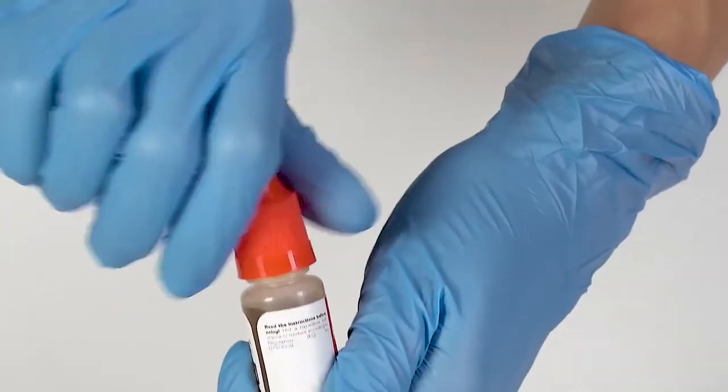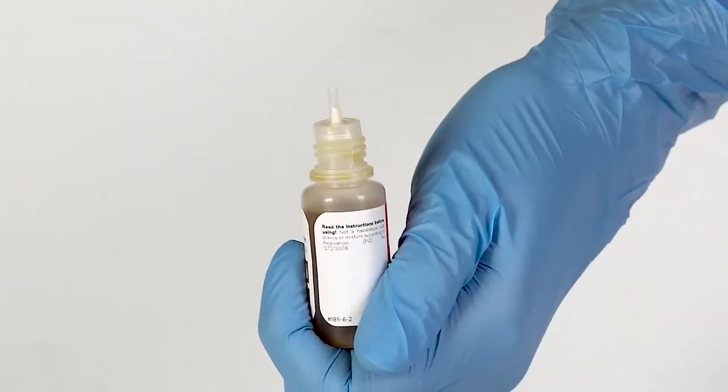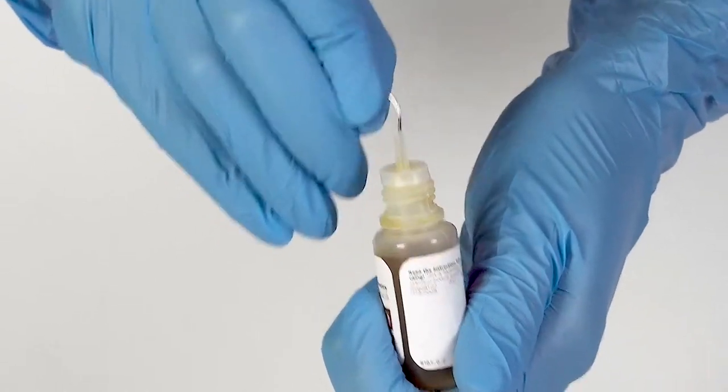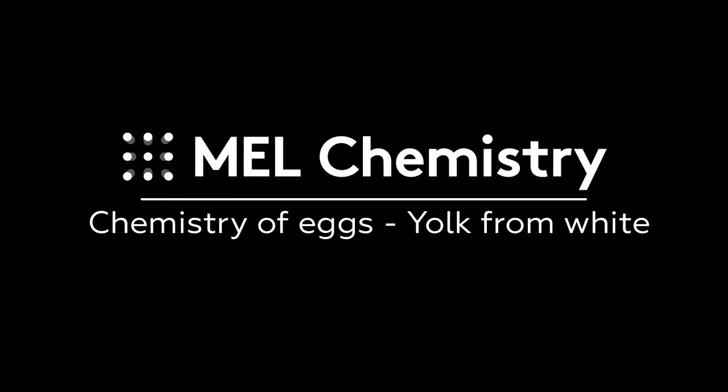To open a bottle containing a reagent, push the cap down and turn it. Pierce the bottle nozzle with an unbent paper clip.